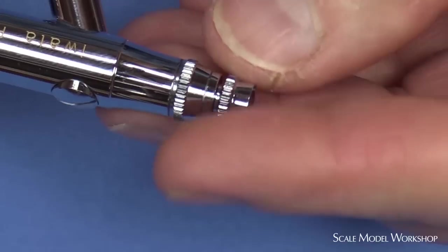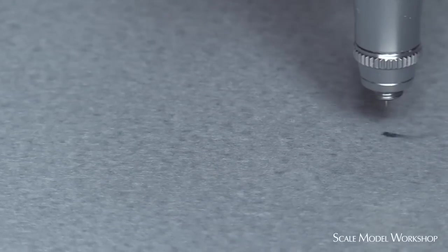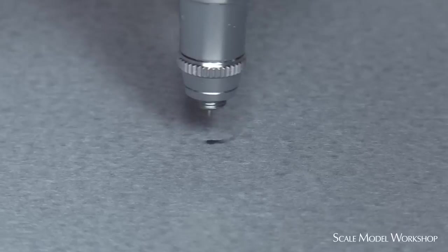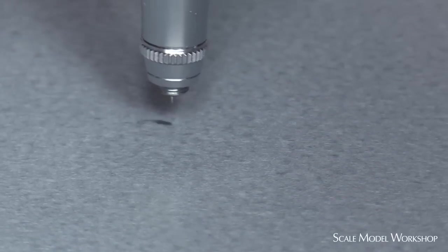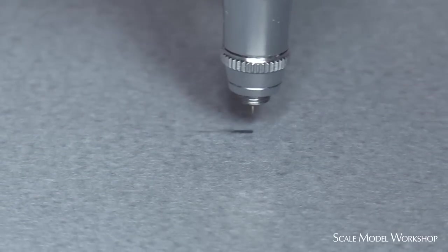Experienced airbrush artists typically remove the tip guard so they can get close into the surface. It's the key to a sharp line. For our modeling purposes, just about any quality airbrush with a nozzle size of 0.5 millimeters or less will produce more than adequate edge sharpness as long as you get it in close enough to the surface.